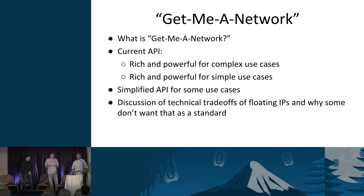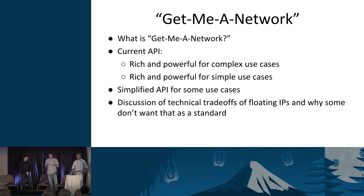One of the things we looked at during Liberty was what's been termed 'get me a network.' It really is just as simple as: I just want a network for my instance. I just want the VM to come up with connectivity. We iterated on this a bit during Liberty — we merged the spec, and there was a version of the patch towards the end, but it was more of a proof of concept. So that's something we're looking at for Mitaka and the team is really prioritizing it. The OpenStack infra team, for example, wants to be able to put VMs right on public networks without using floating IPs.